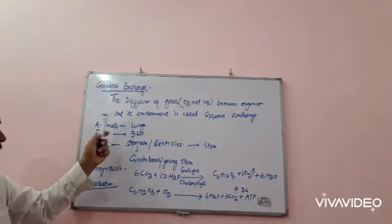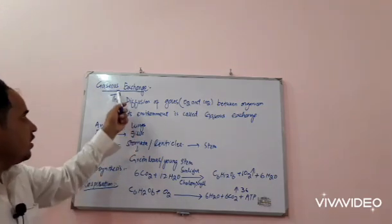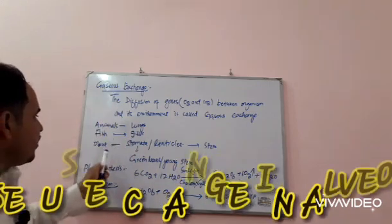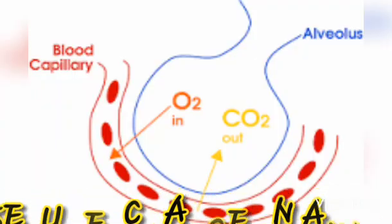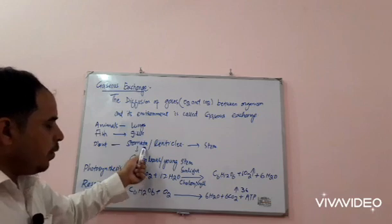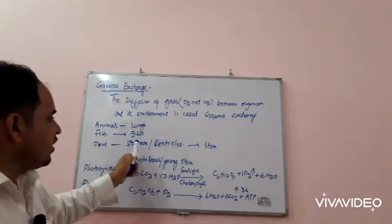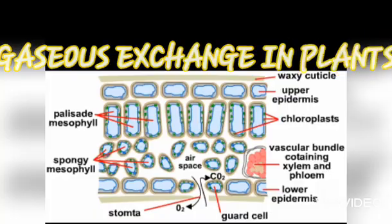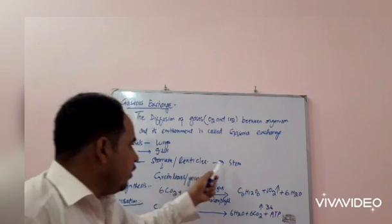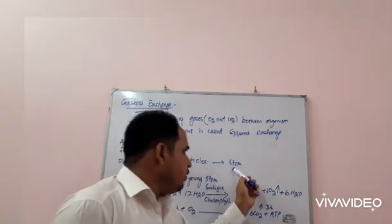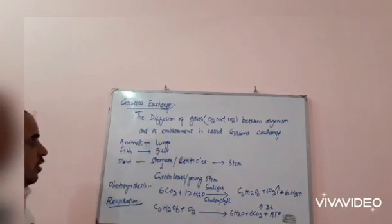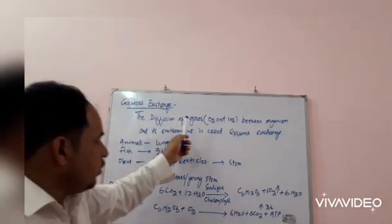Animals use lungs for gaseous exchange. Fish use gills for gaseous exchange. In plants, green leaves use stomata for gaseous exchange, and young stems also use stomata. In woody plants, lenticels are used for gaseous exchange.